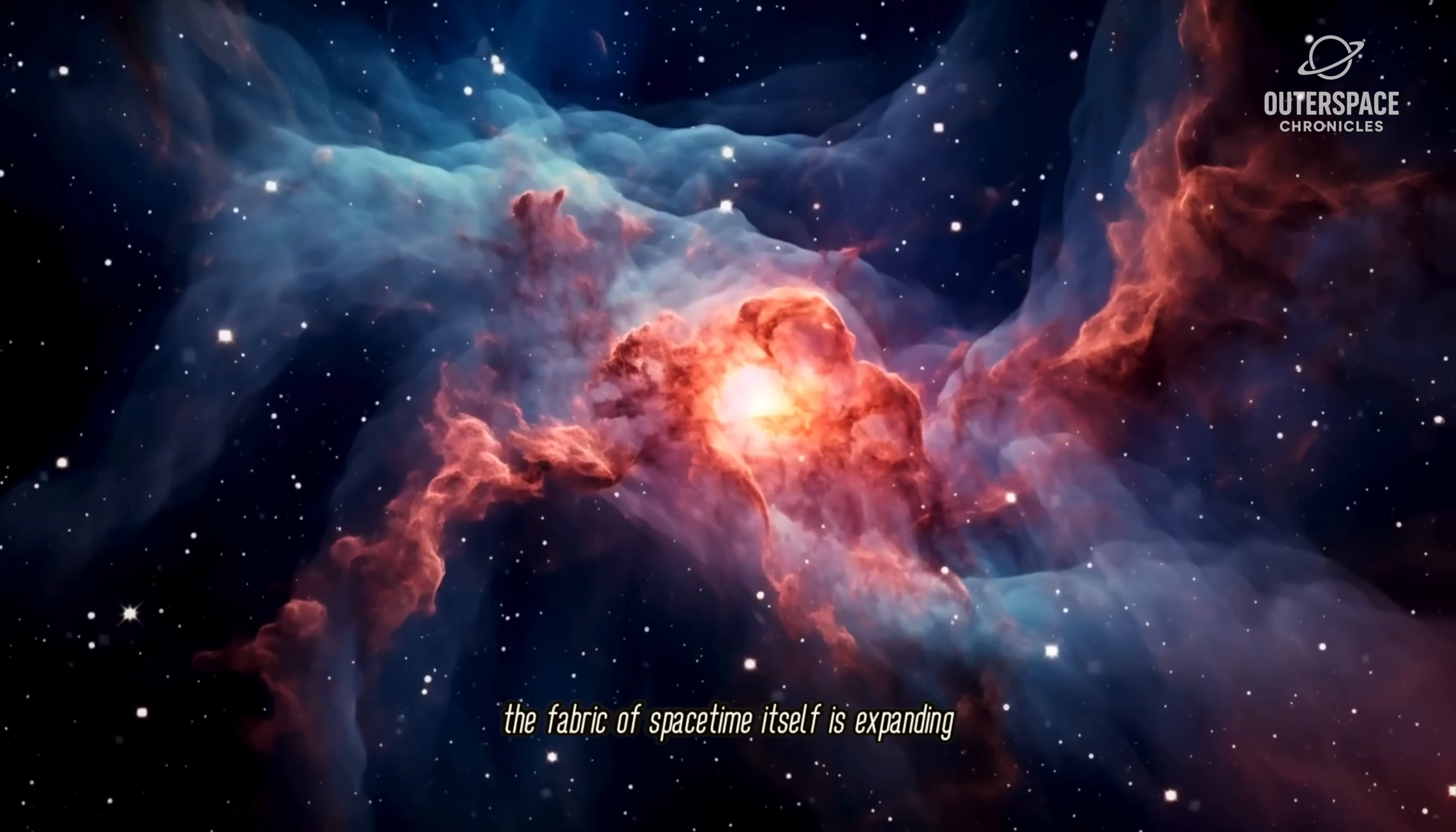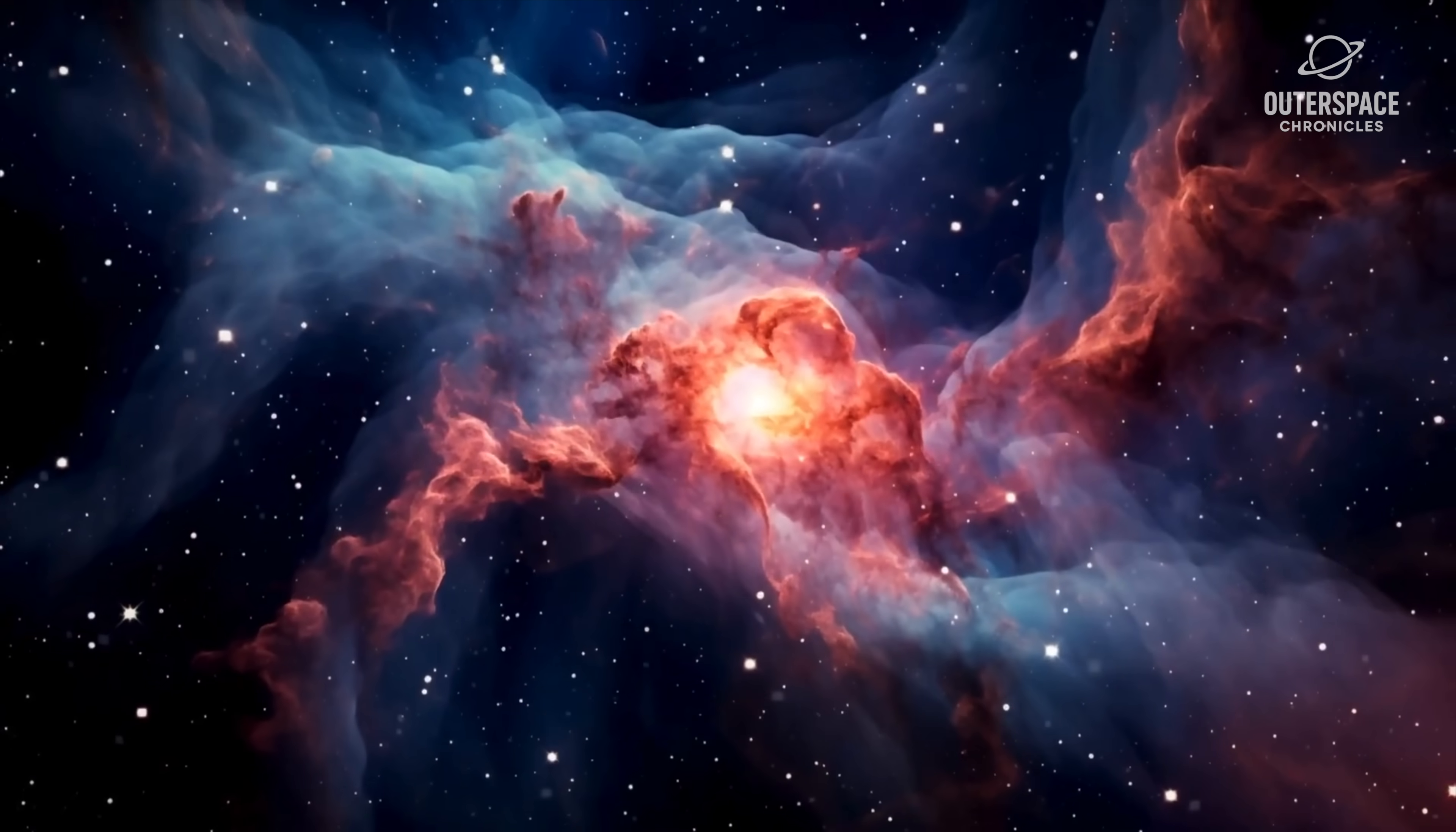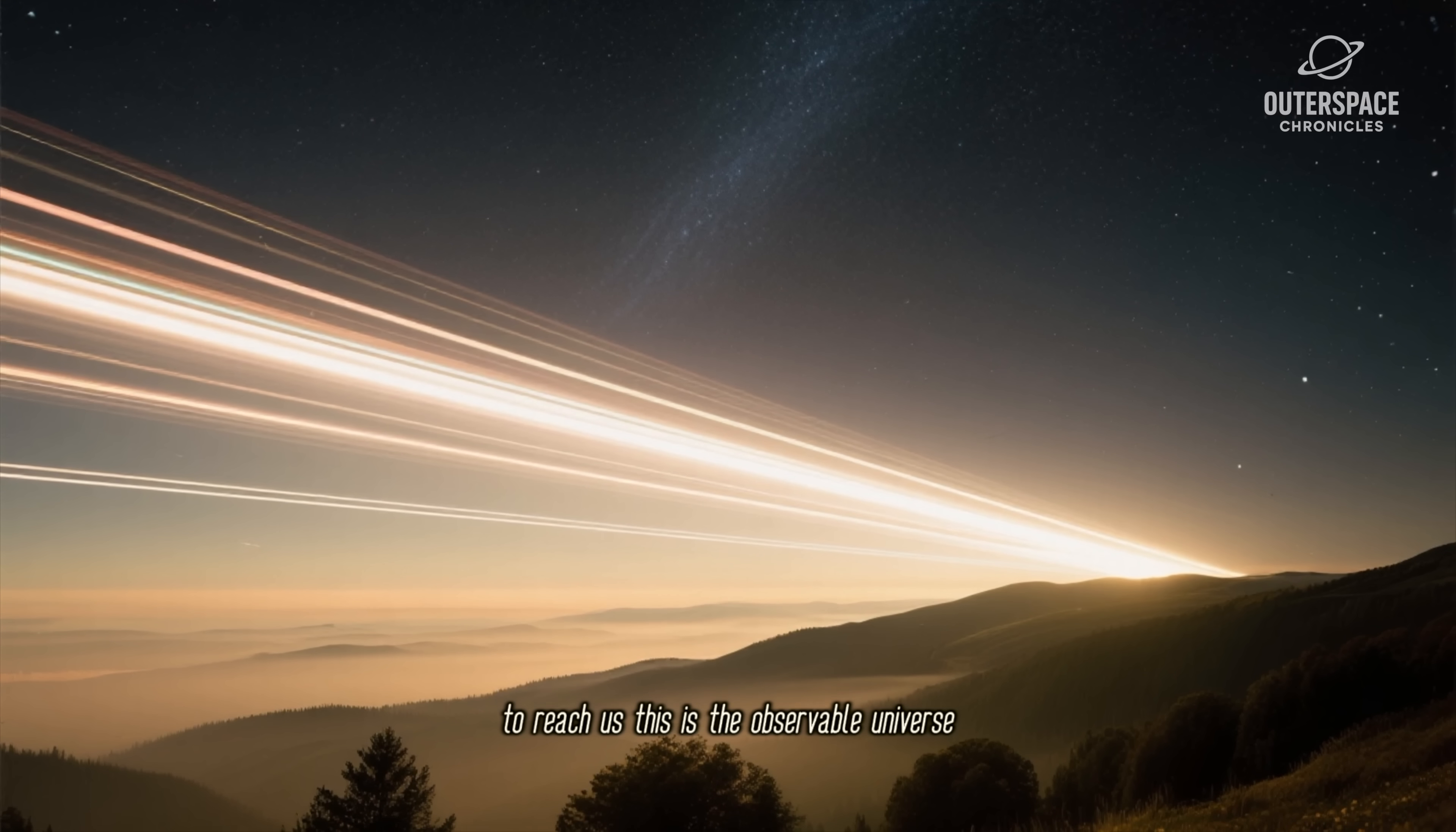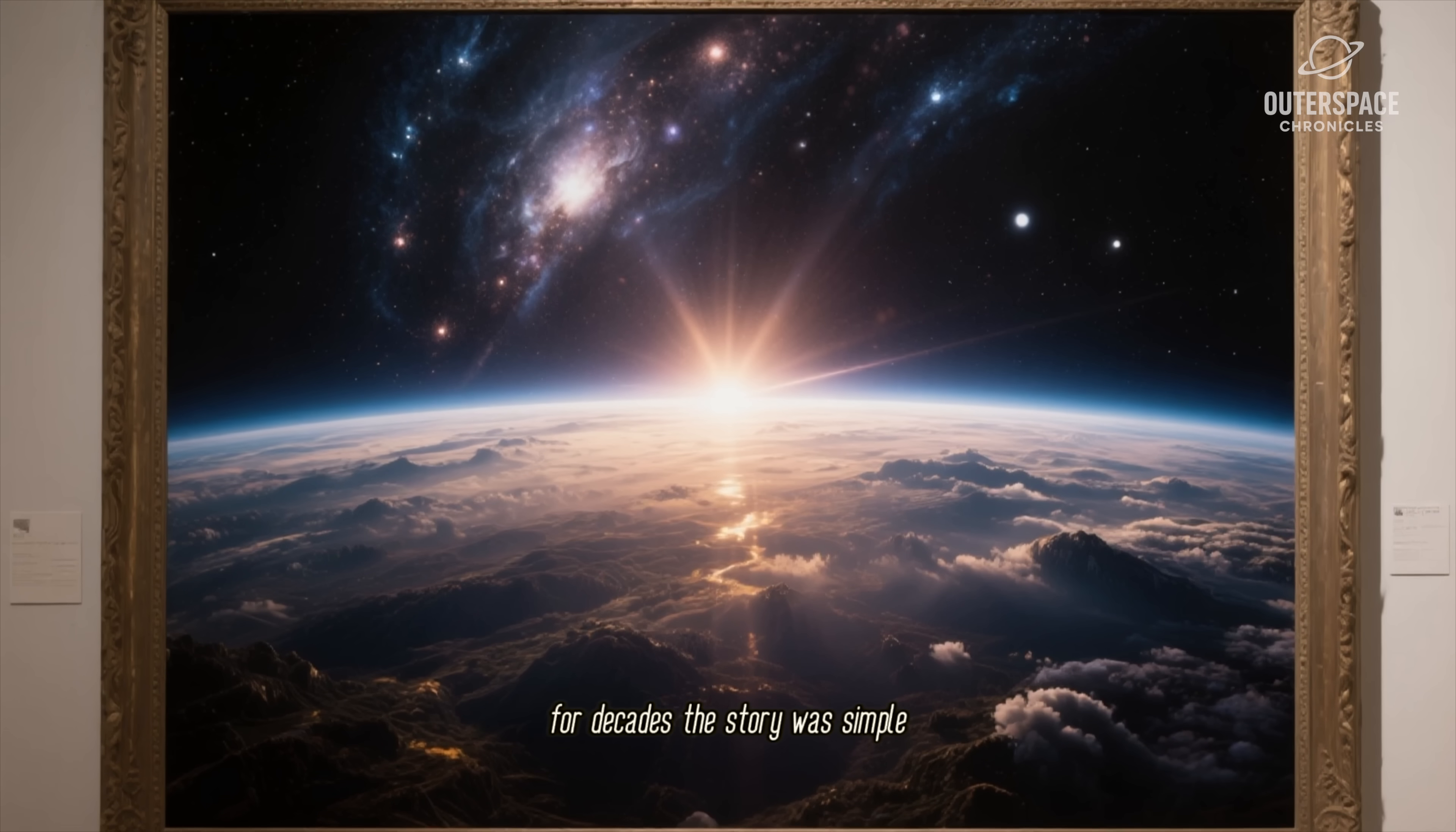Galaxies aren't just flying through empty space—the fabric of spacetime itself is expanding, carrying them with it. This created a natural boundary to what we can see. Since the universe has a finite age, there's a hard limit to how far light has had time to travel to reach us. This is the observable universe, and its edge is what we called the cosmic light horizon.